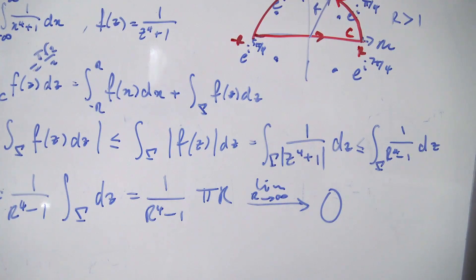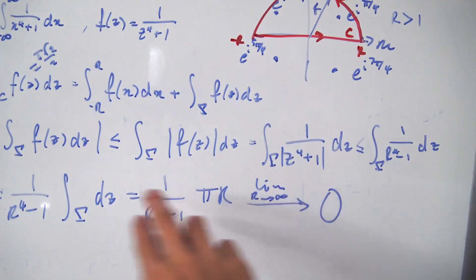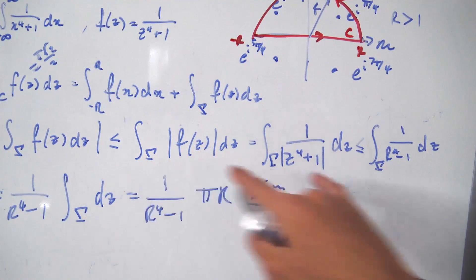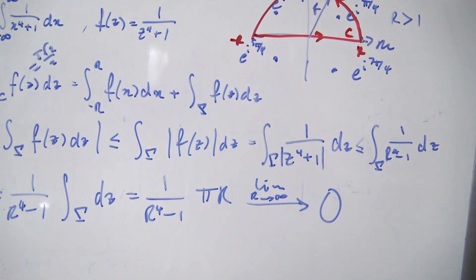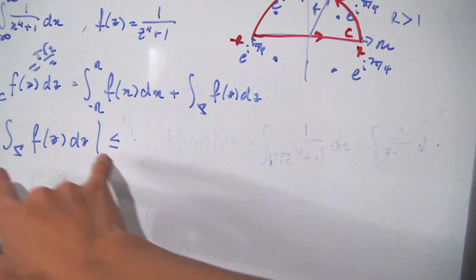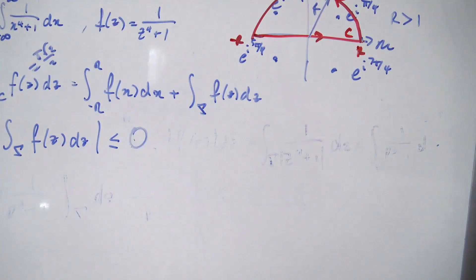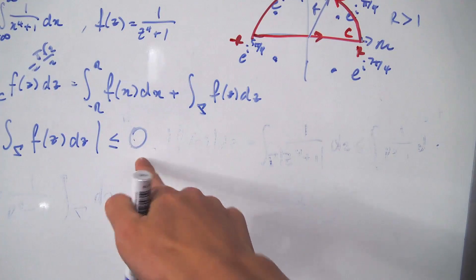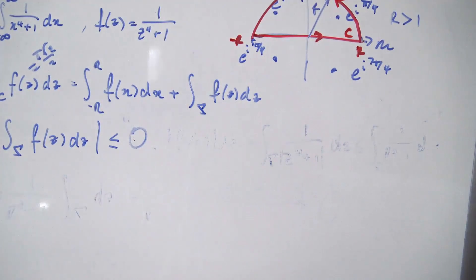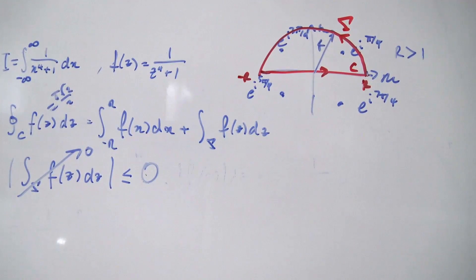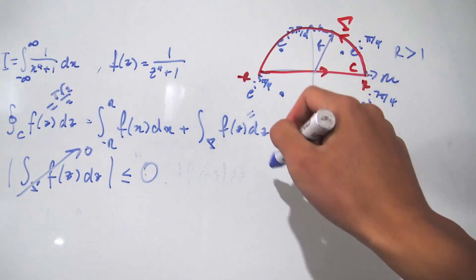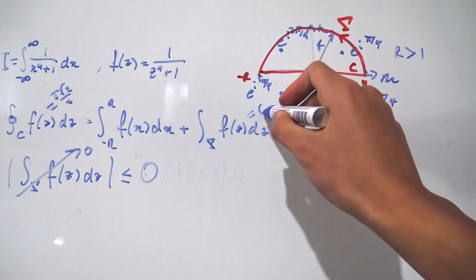So we've shown that the absolute value of the integral over gamma is less than or equal to 0 in the limit as R→∞. Since an absolute value is always non-negative, the only possibility is that the integral over gamma equals 0. Therefore, in the limit as R approaches infinity, the arc contribution vanishes entirely.